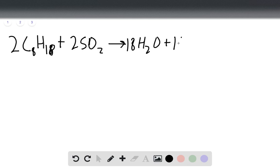So now we write the chemical formula for the combustion of octane: 2 C8H18 plus 25 O2 forms 18 H2O plus 16 CO2.